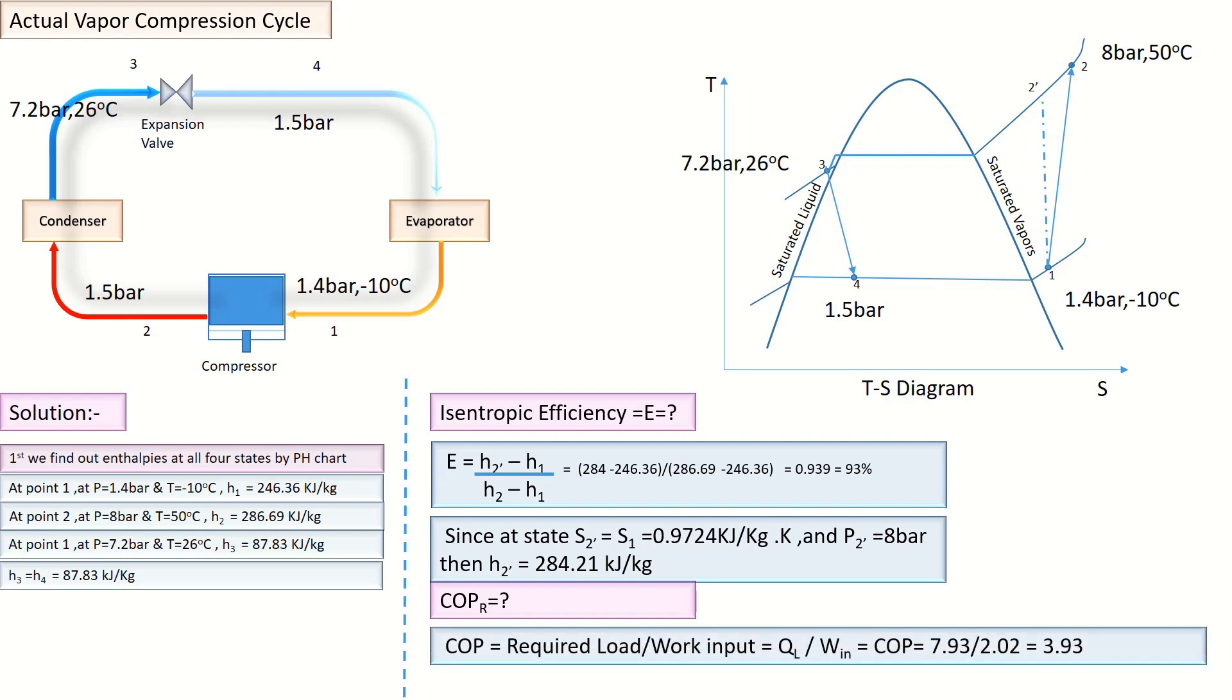COP is equal to required load divided by work input. Required load is how much heat is absorbed in evaporator and work input is how much power is required by the compressor. Putting the values, we get COP = 3.93.